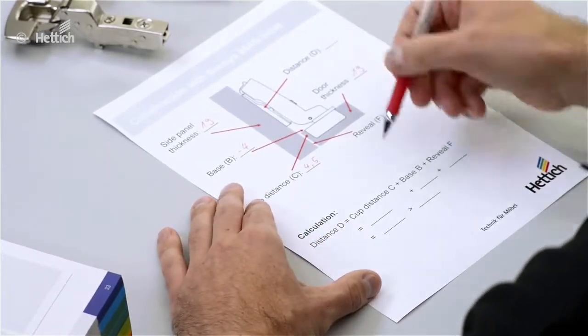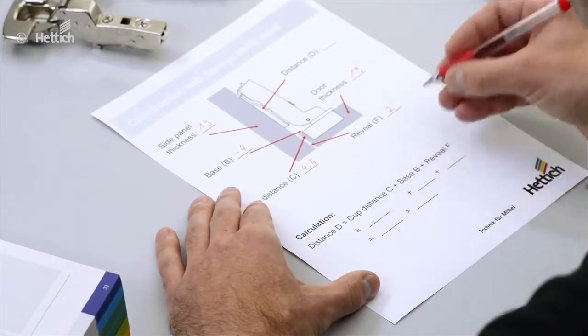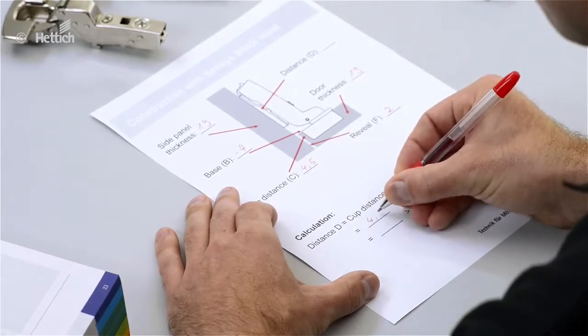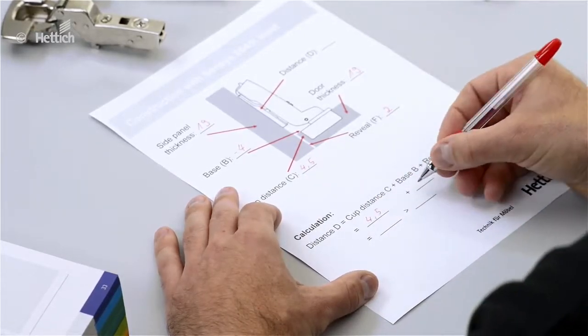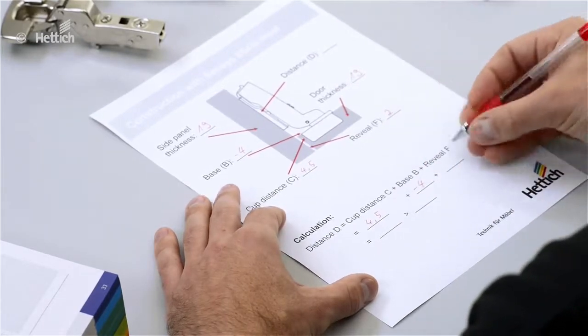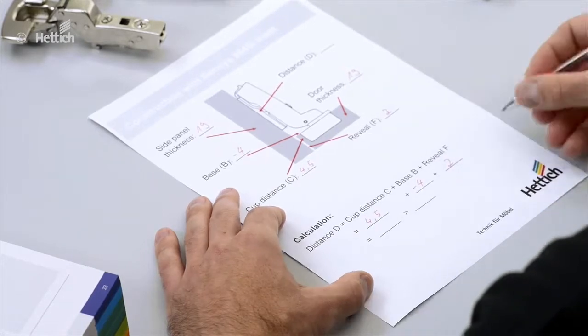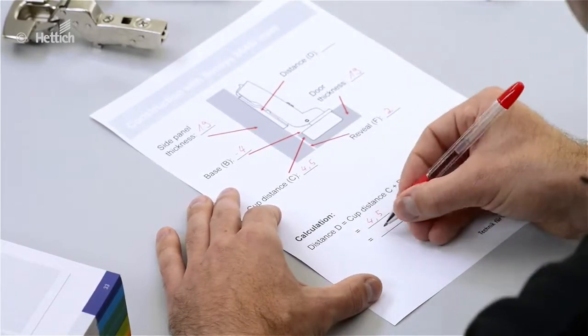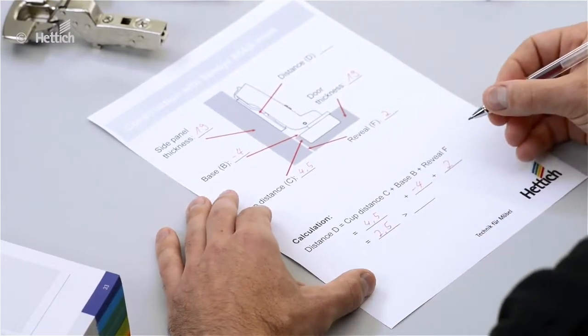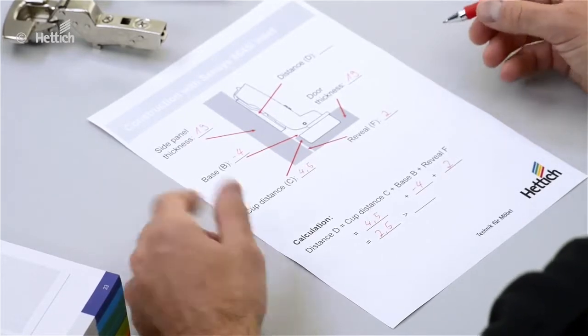Then we can fill in the values into the formula. Cup distance C is 4.5mm plus base B minus 4mm, and the reveal is 2mm.